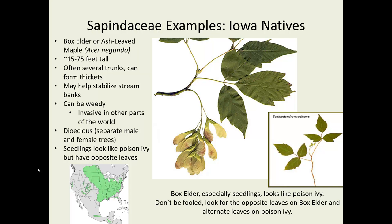Box elder is dioecious, meaning the male and female trees are separate rather than having separate types of flowers on the same tree. One thing that can be done to reduce its spread is to cull female trees, because then no seeds can be produced — you just have the males putting out pollen, which greatly reduces the spread. It is interesting in that it looks remarkably similar to poison ivy, particularly in the seedling stage. However, the leaves are opposite on box elder, whereas in poison ivy they are alternate. So if you're out in the woods and wondering whether to avoid what's growing in the understory, if it's got opposite leaves, you're probably good to go.